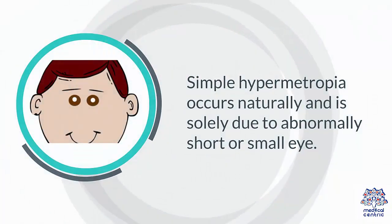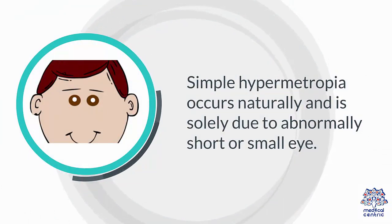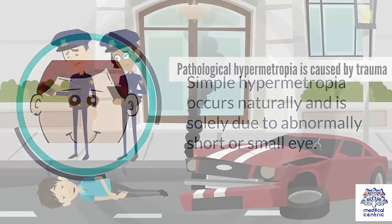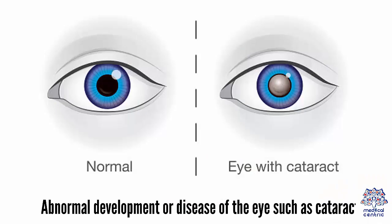Simple hypermetropia occurs naturally and is solely due to an abnormally short or small eye. Pathological hypermetropia is caused by trauma, abnormal development, or disease of the eye such as cataract.